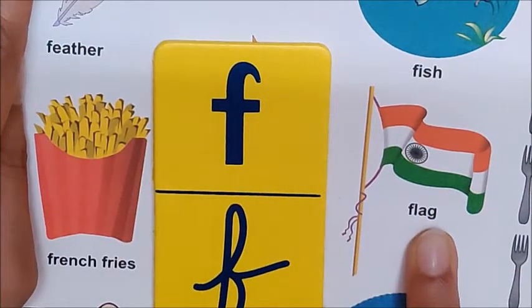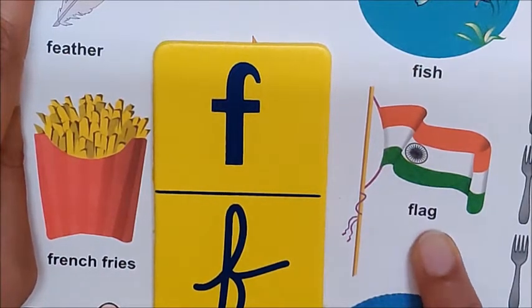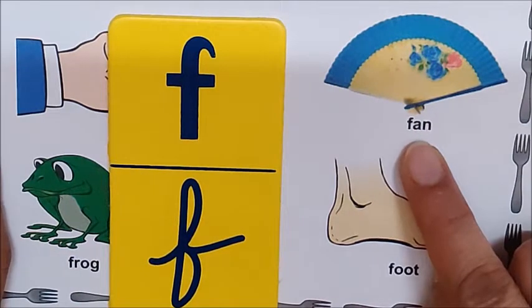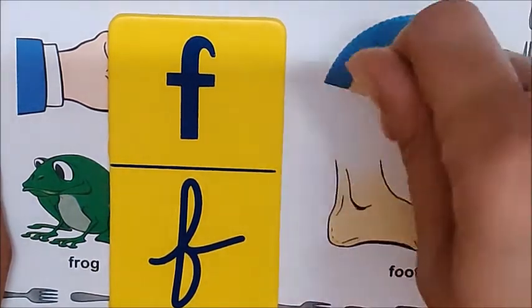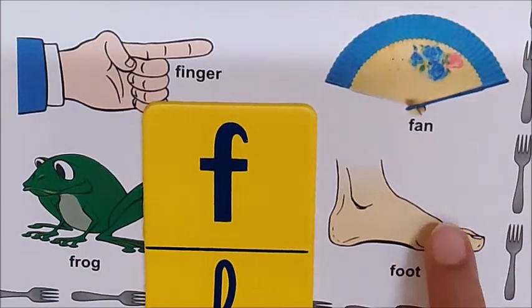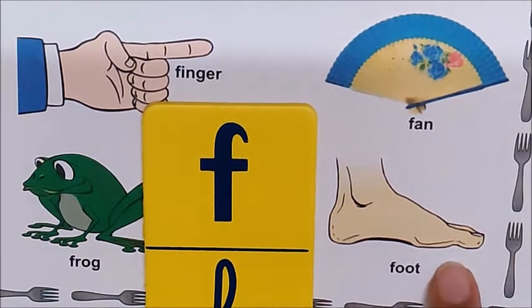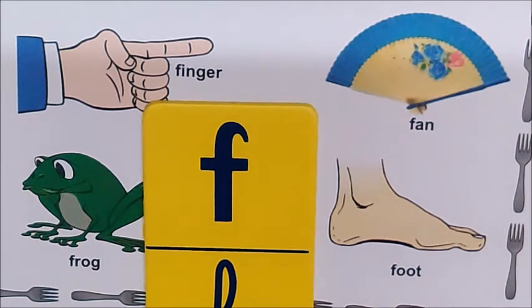F for flag. Children, which country's flag is this? India. This is our country's flag. F for fan. Children, this is a hand fan. You have to hold the fan from the bottom. And then you have to move it like this. F for foot. Children, this is one. So, that is why we are saying foot. When we talk about two, then we will say feet. F for foot. F for feet. Everybody, touch your foot. Good.